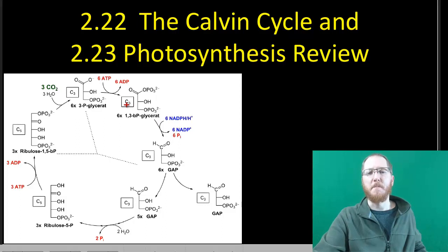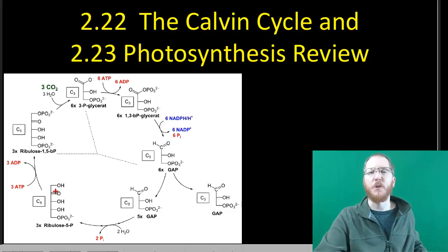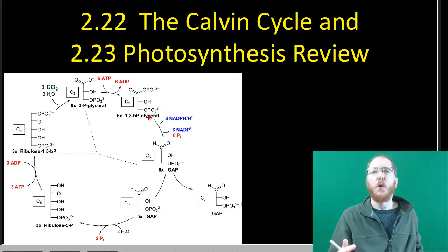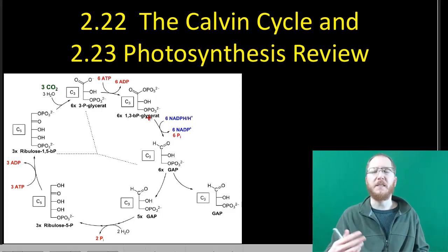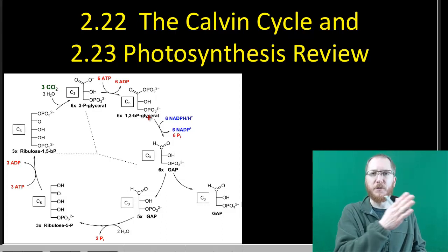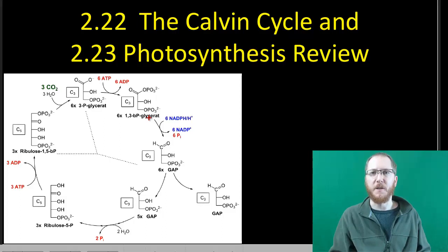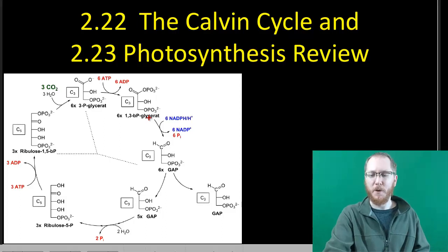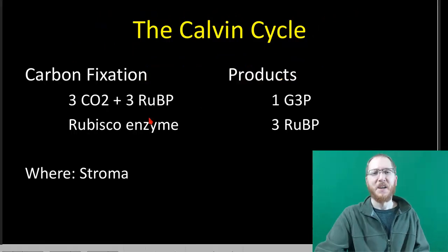We're not going to go through and try to memorize all the various steps that are part of this. We're just going to make sure that as a whole you understand what the purpose of this process is, what it does for a plant, why plants need to do it, and what it needs to function. A lot of these things we talk about in regular biology, which we simplify, are in reality a whole series of — in some cases — 10 or 20 different reactions all working together. So there are a lot of steps in between the start and the end.